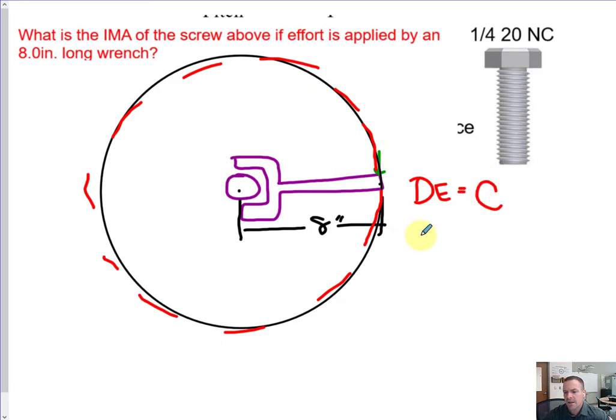And DR is going to be the distance between this thread and this thread. So one rotation of this bolt means it will go down that far. The distance the resistance is going to travel is going to be divided by pitch.